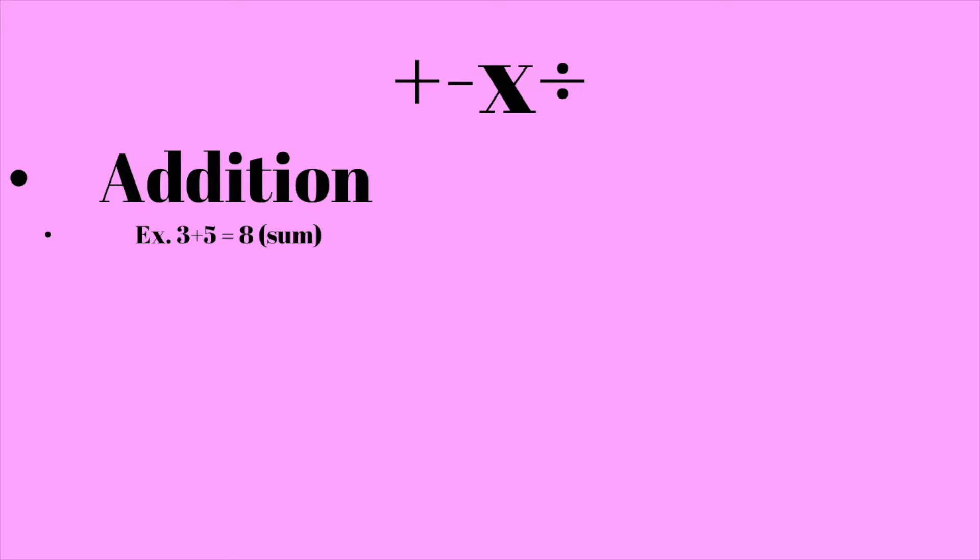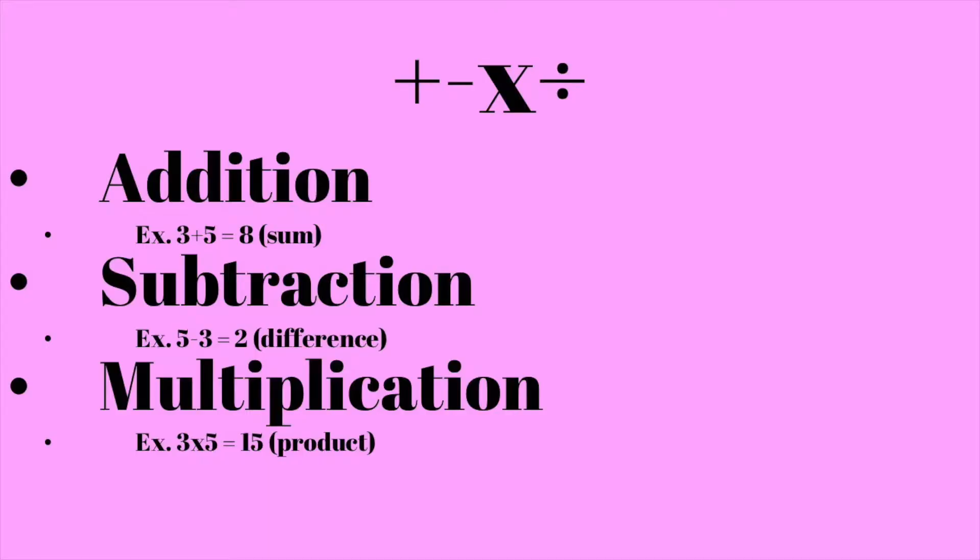Now with the four basic functions of math, you have addition, subtraction, multiplication, and division. With addition, the end result you have is the sum. With multiplication, the end result is called the product. If you have 3 times 5 equals 15, for example, 15 is your product.